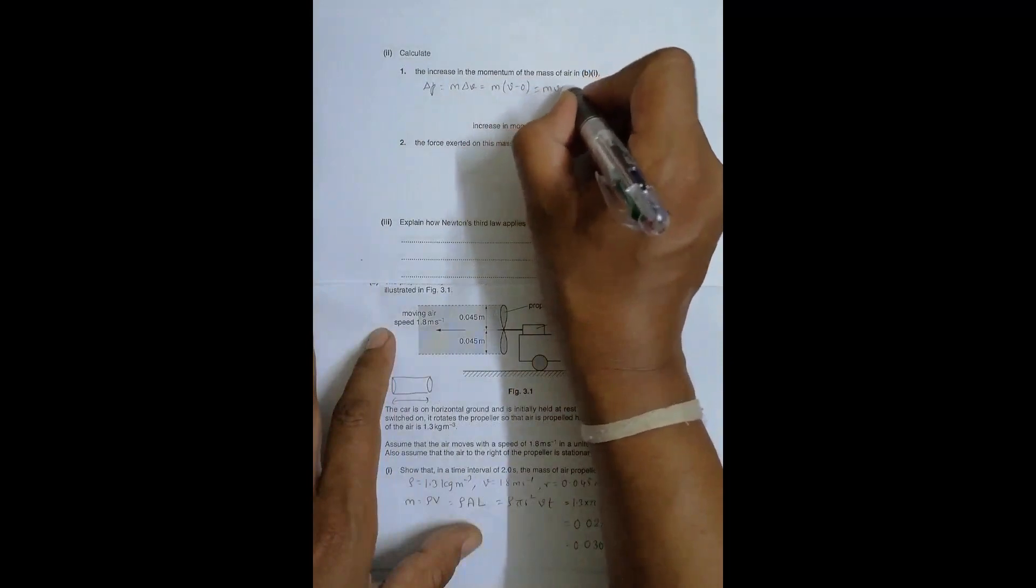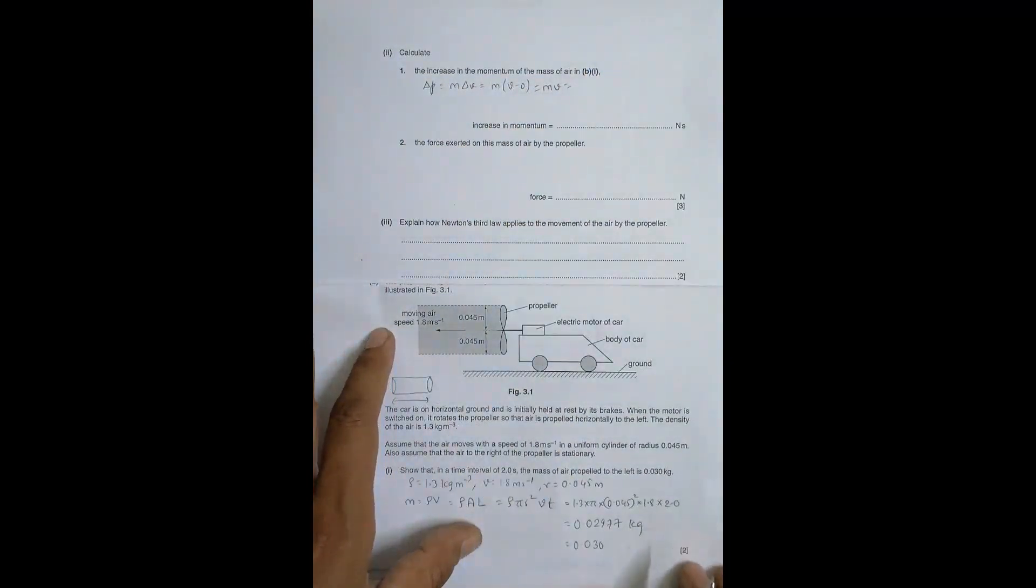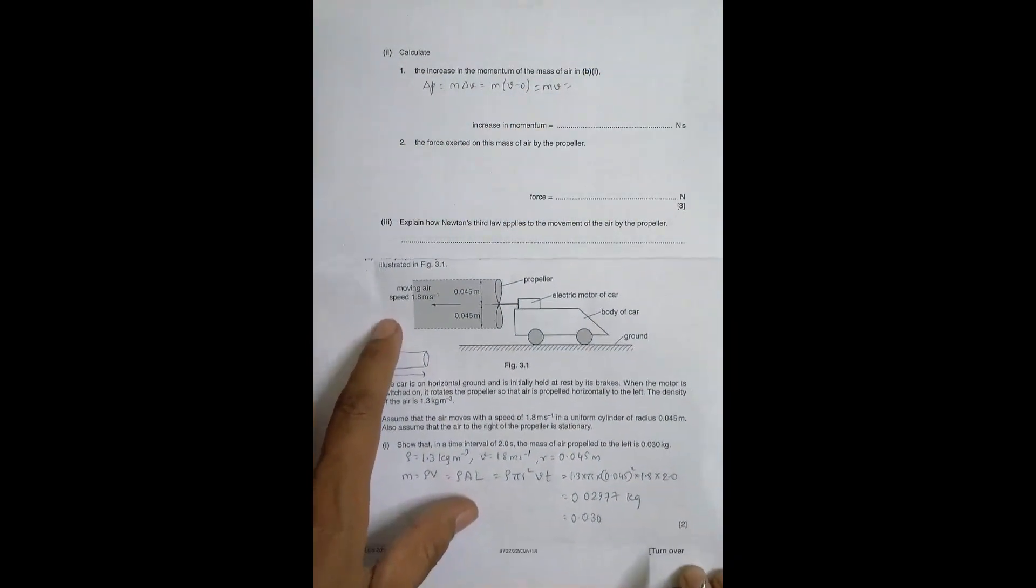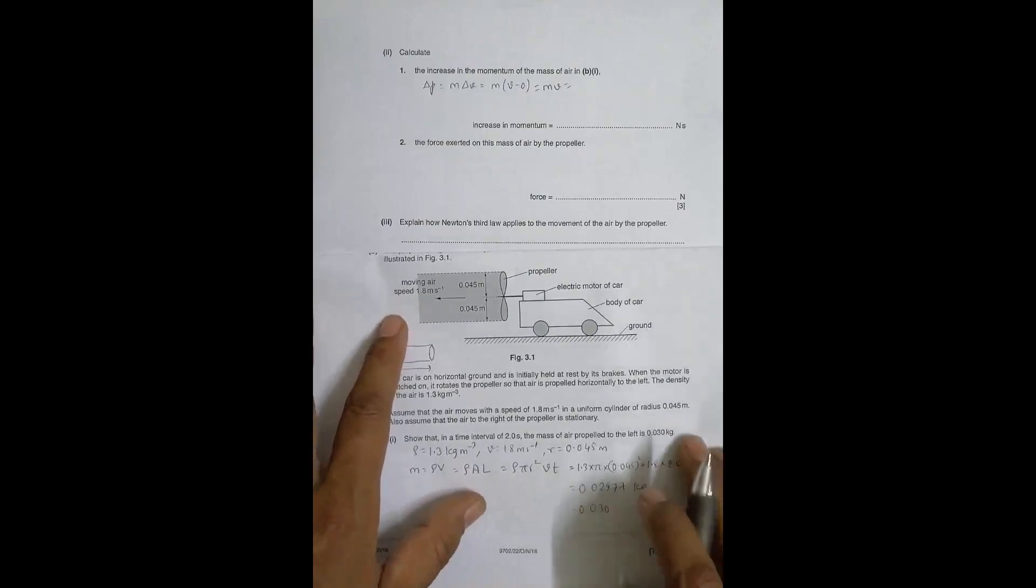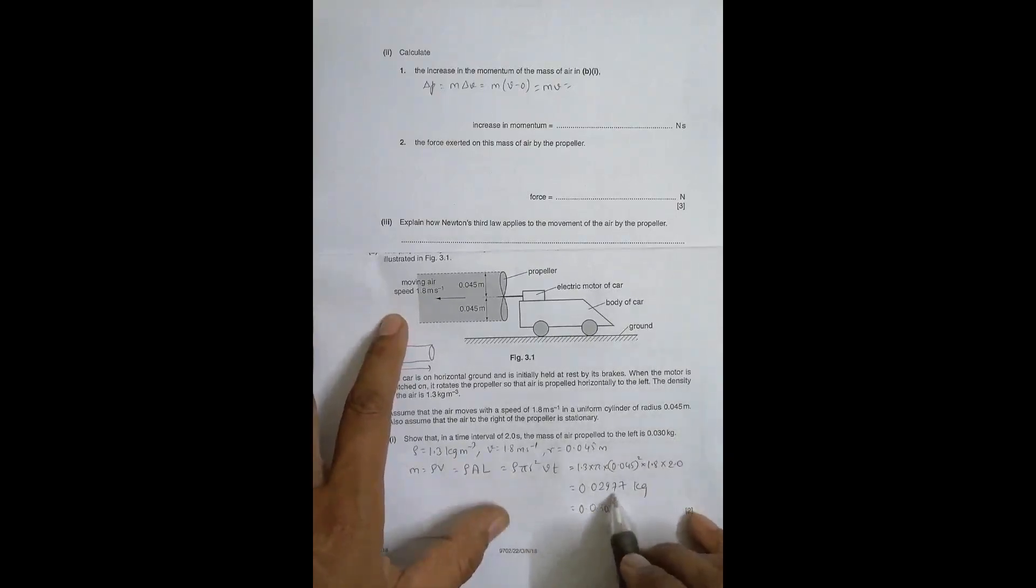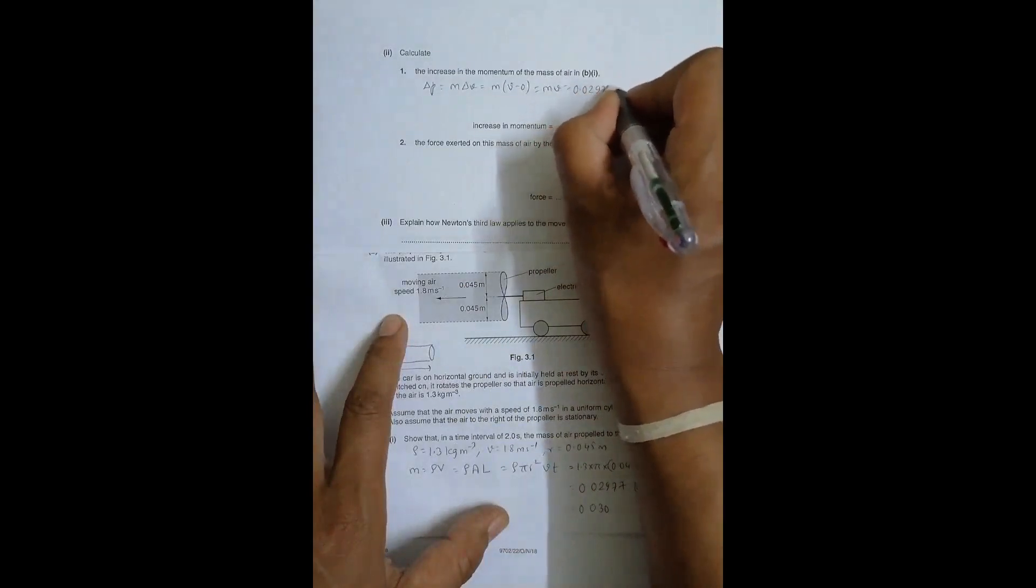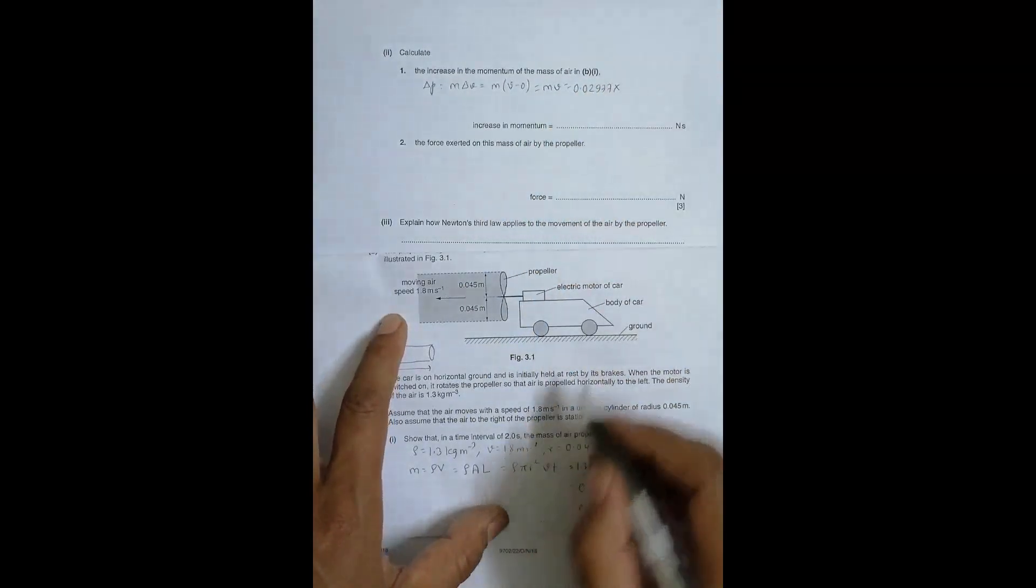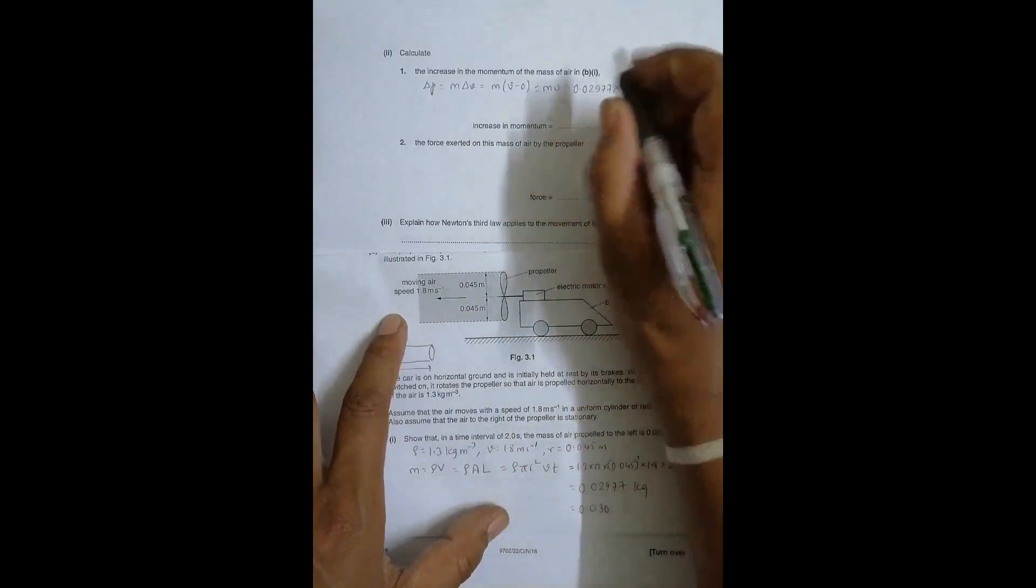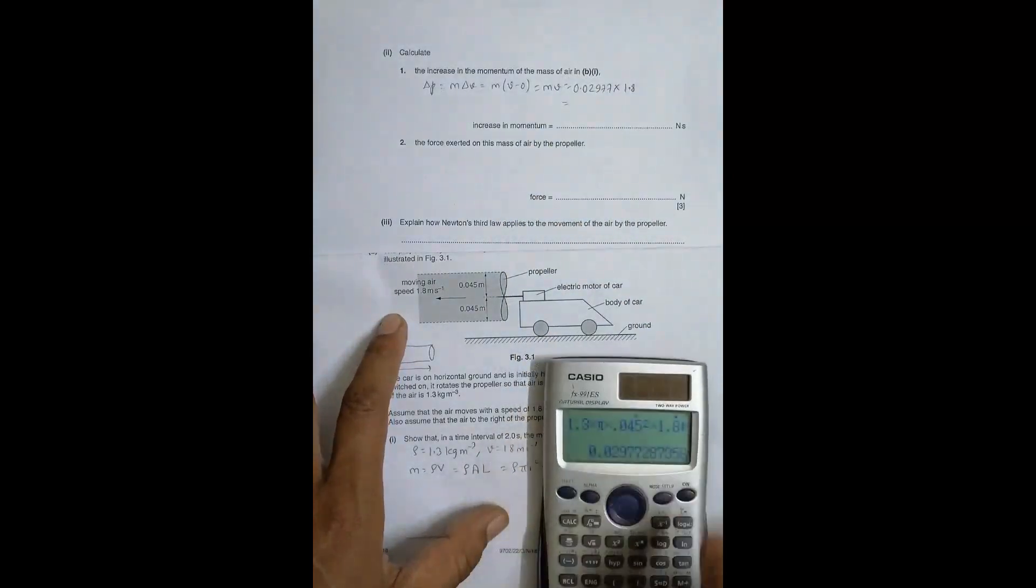Initial velocity zero, so that's equal to simply m into v. The mass is as we got previously, 0.02977 into the velocity is 1.8. This will be equal to 0.05359 kg meter per second.